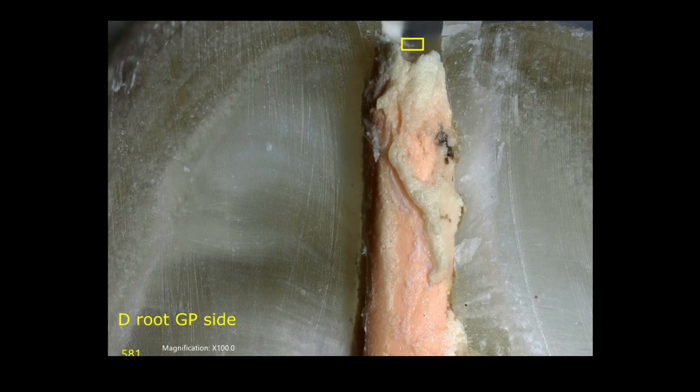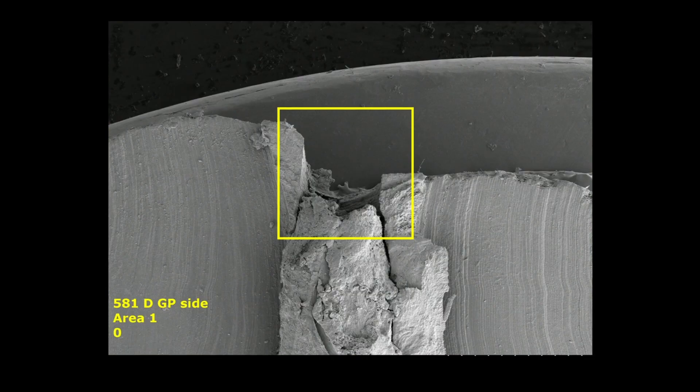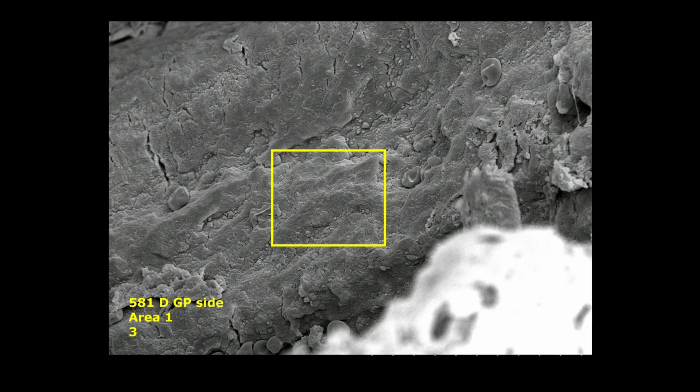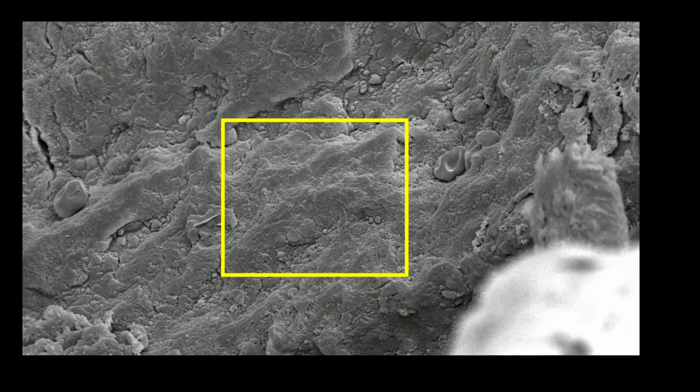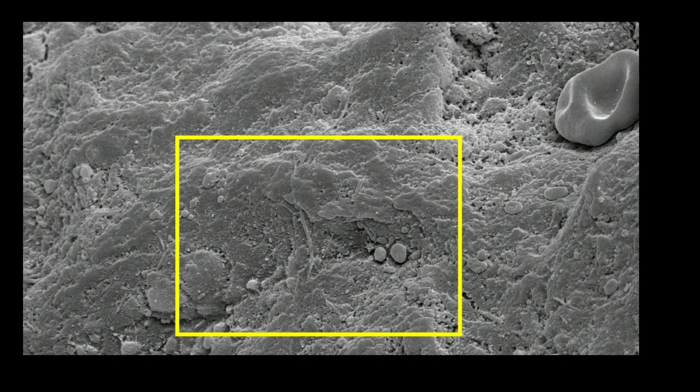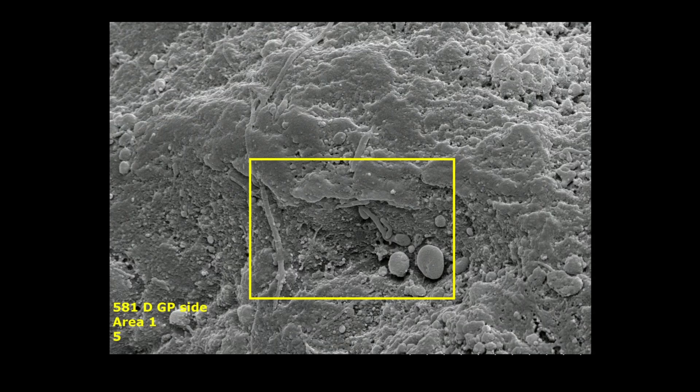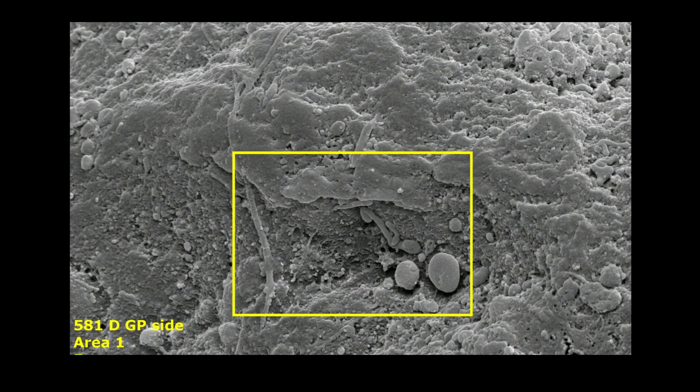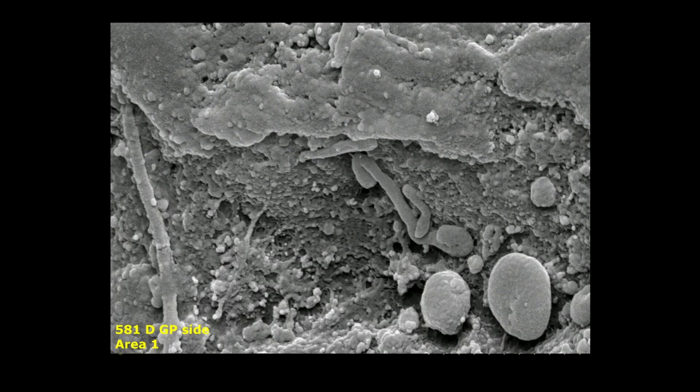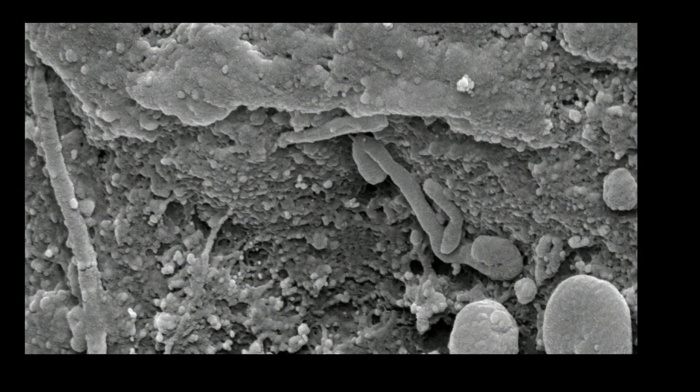In the distal root, when we went and looked apically, we could be a little more certain. And pretty much everywhere you looked at the apical end of the distal root, there were organisms present in a pretty robust biofilm. And you should be far enough along in your pattern recognition to be able to see this with a certain amount of certainty.